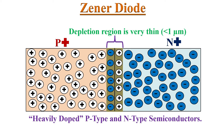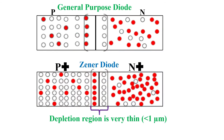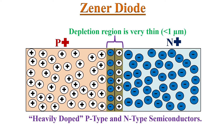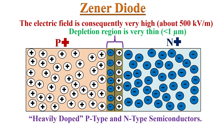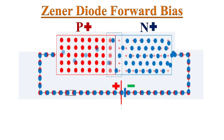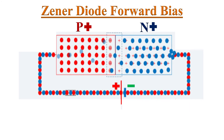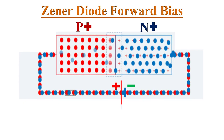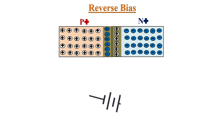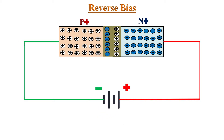Due to the heavily doped semiconductors, the width of the depletion region becomes very thin compared to a normal diode. This is because when electrons diffuse from the N side to the P side, they recombine very close to the junction. Also due to heavy doping, the thin depletion region has more immobile ions, so the built-in electric field inside the depletion region is much stronger. A Zener diode behaves just like a normal PN junction diode and passes rated current when connected in forward bias. When connected in reverse bias, the external electric field adds to the built-in electric field, making the depletion region even thinner.